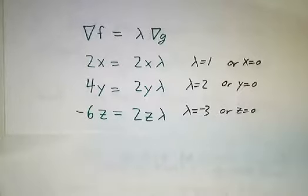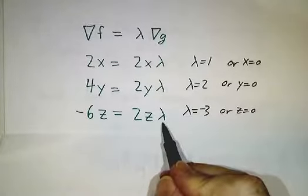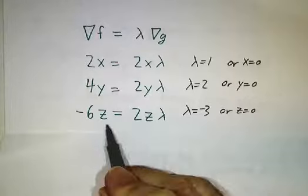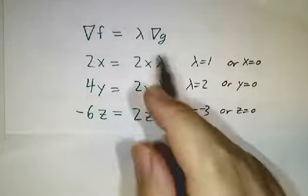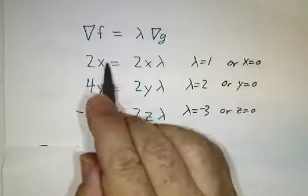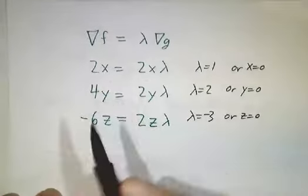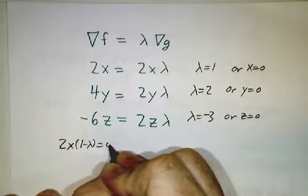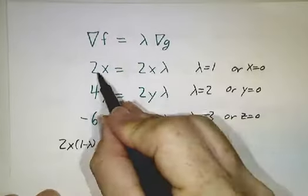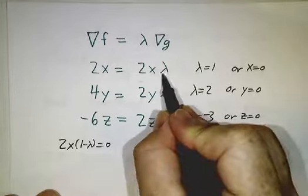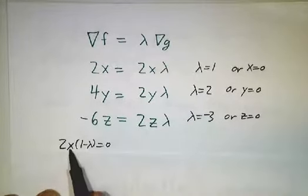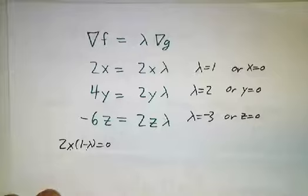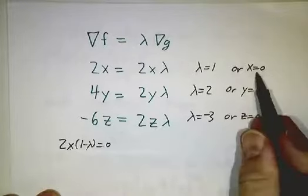So when doing Lagrange multiplier problems, you often have the situation that an equation seems to tell you what lambda is, but you always have to be careful to be sure that it's not just a 0 equals 0 equation. To be even more precise, if you look at the first equation, we put things on both sides, we get 2x times 1 minus lambda equals 0. That means that either x is 0 or 1 minus lambda is 0. So lambda equals 1 or x equals 0.